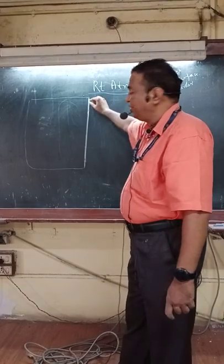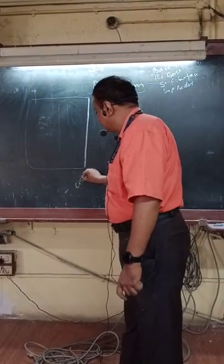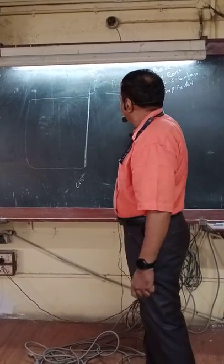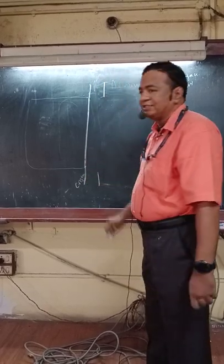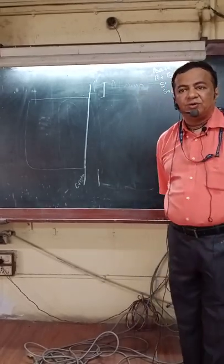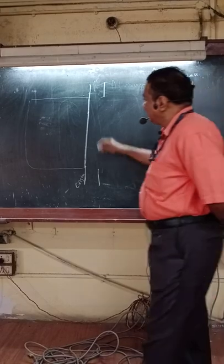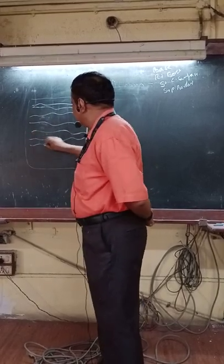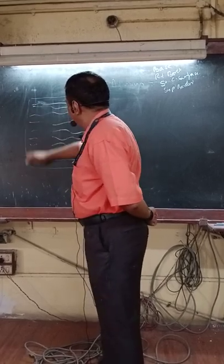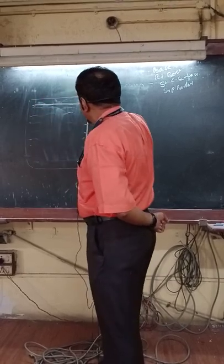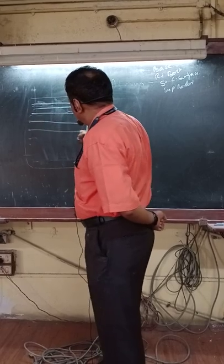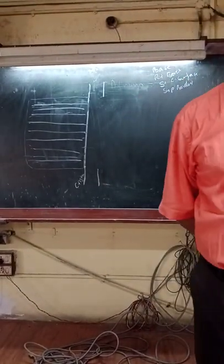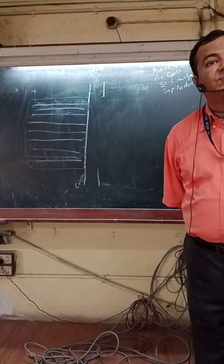At the starting point of the anterior wall, I see this structure called crista terminalis, running from the SVC to IVC downwards. And starting from the crista terminalis, we see musculi pectinati running across — this is the rough part.